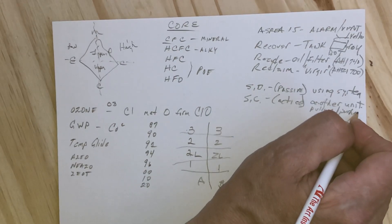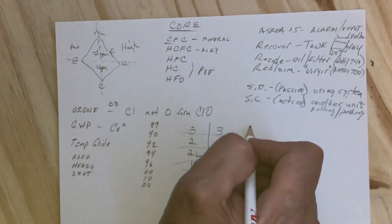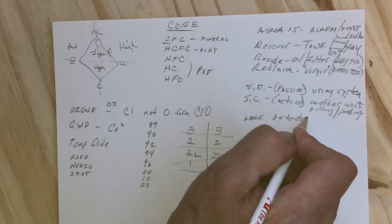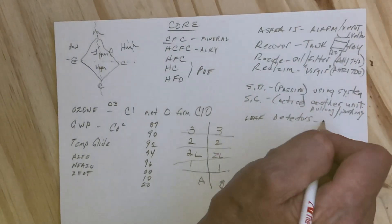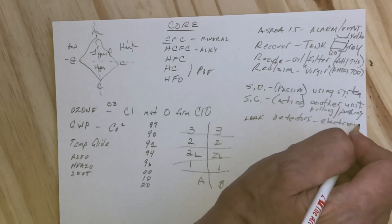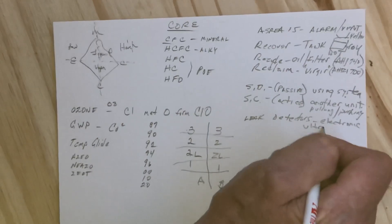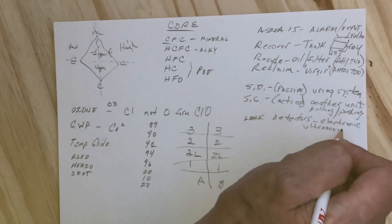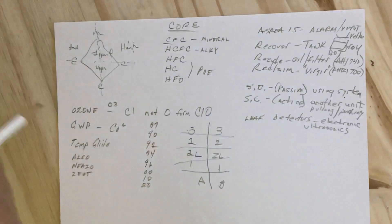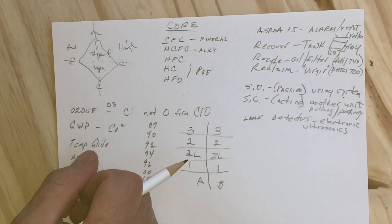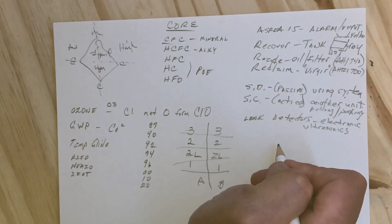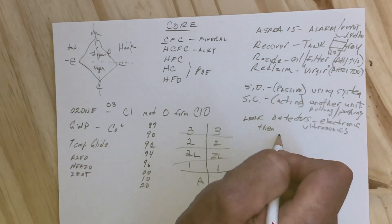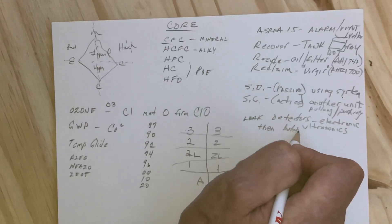Some things about leak detectors: you've got your electronic and ultrasonic, which are best for the hydrocarbon-based refrigerants because they don't have an odorant to detect. Ultrasonic would probably be the way, and then even after you find the leak in the general area, use soap bubbles to pinpoint the leak.